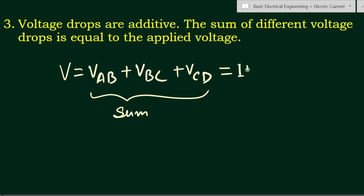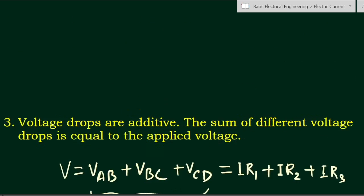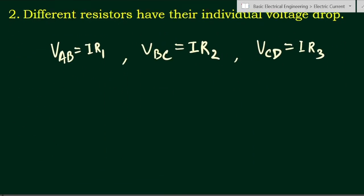Substituting the Ohm's Law expressions: V = I·R1 + I·R2 + I·R3. These are the voltage drops across the three resistances R1, R2, and R3. The sum of the individual voltage drops equals the applied voltage capital V.